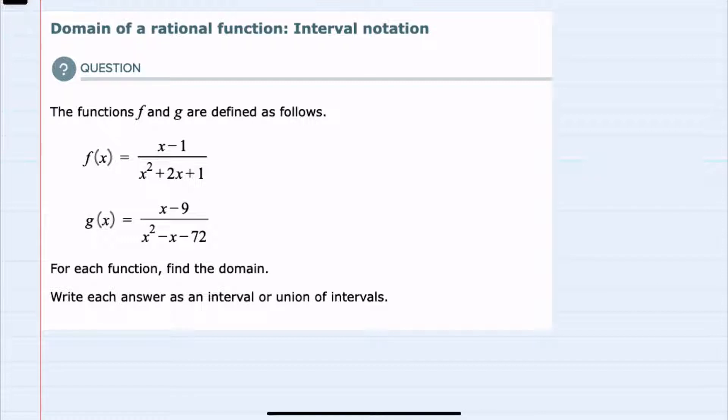So the question in each is what numbers would I have to exclude from the domain? So what numbers can I not plug into these functions? And since they're both fractions, the thing that I don't want is I don't want the denominators to be equal to zero.